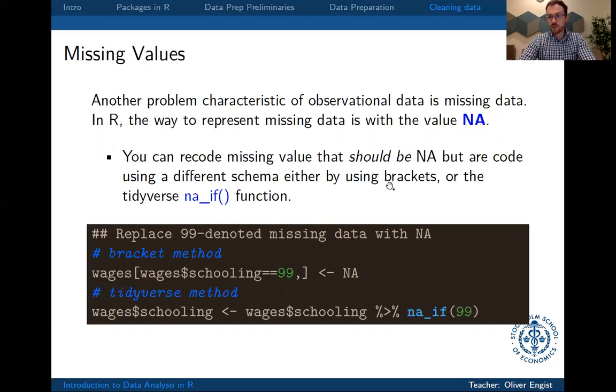So oftentimes this is not the case if you're downloading data and reading them into R, so you have to find out if they are coded, if they have a special code, or if they're just empty, and then you replace them with NA.